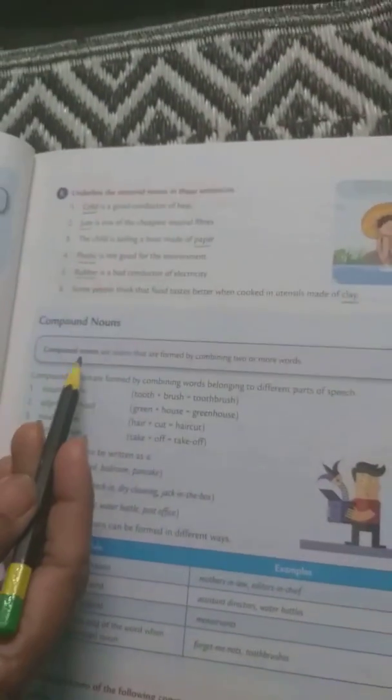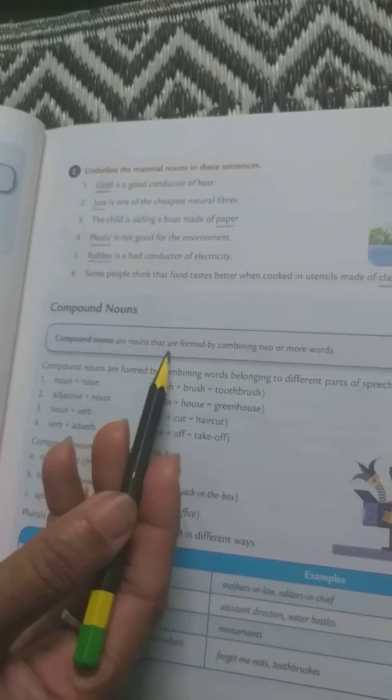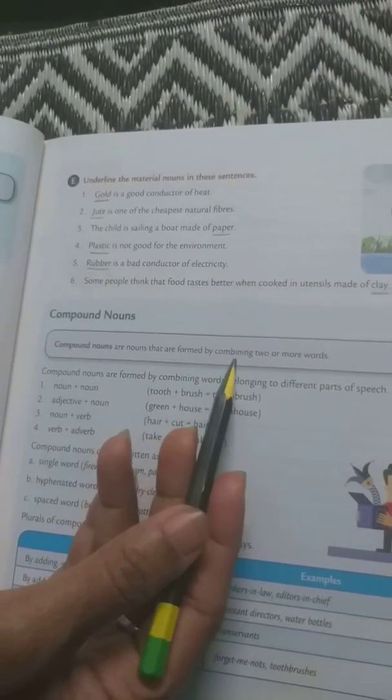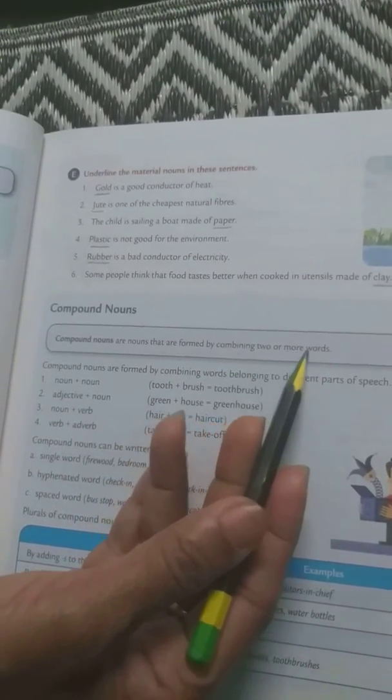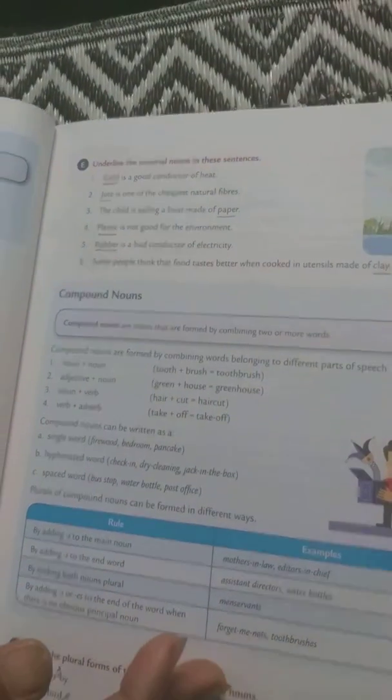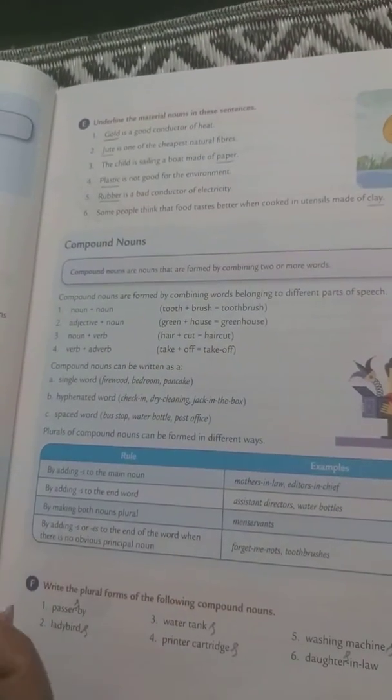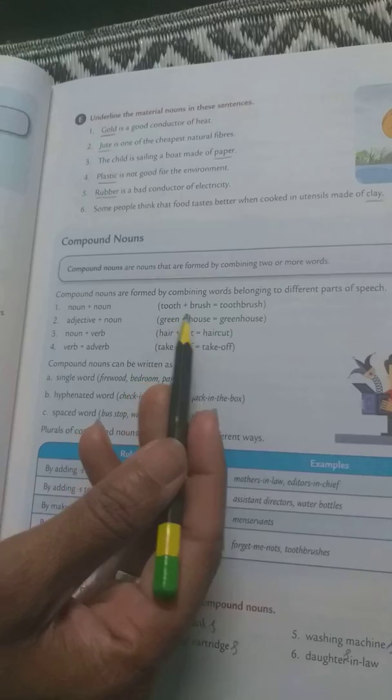What are compound nouns? Compound nouns are nouns that are formed by combining two or more words. It may be two words or more than two words, like your toothbrush.